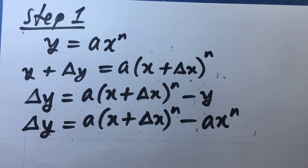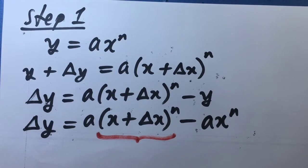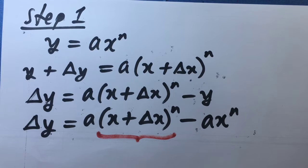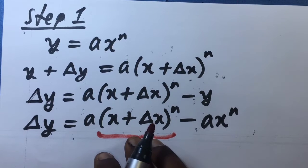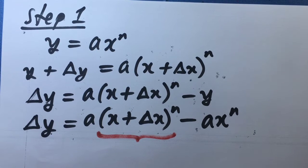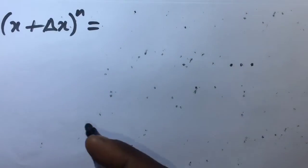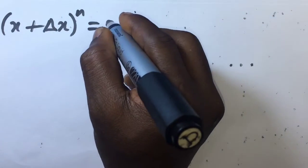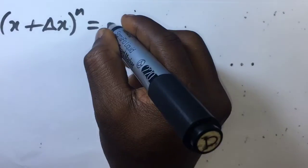What I'm going to do next, still in step 1, is to expand a(x + Δx)^n. Please, if you do not understand binomial expansion or the binomial theorem, check the link in the description to take you to my earlier video on binomial expansion. I'm going to expand this and then put the result into step 1 to get delta y further simplified.